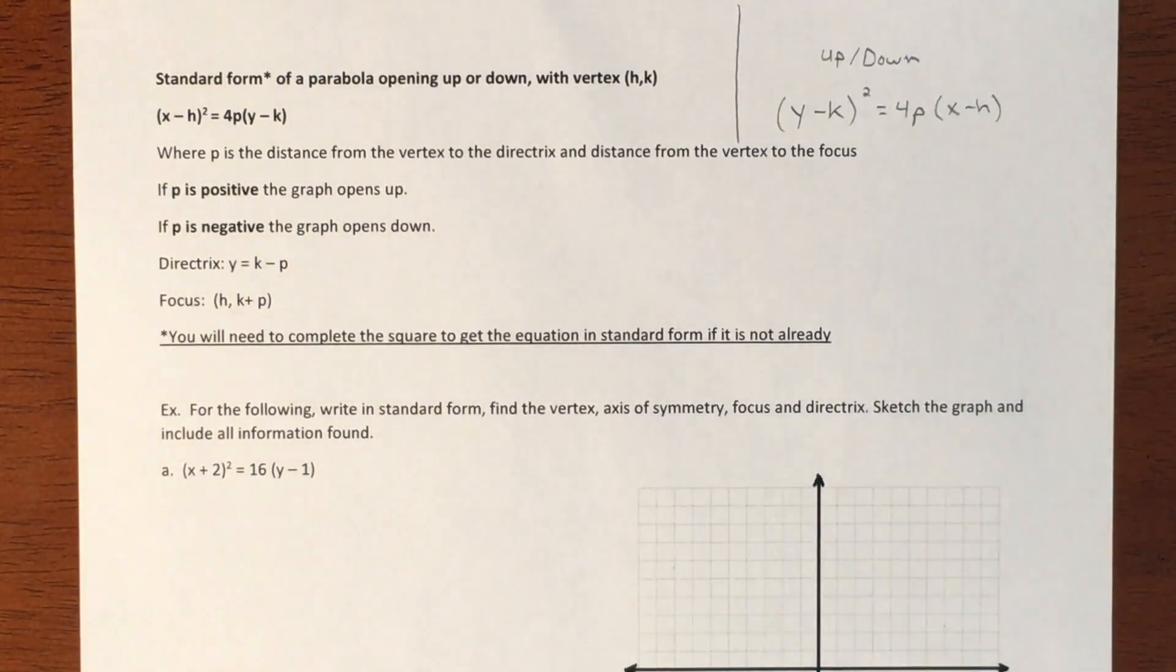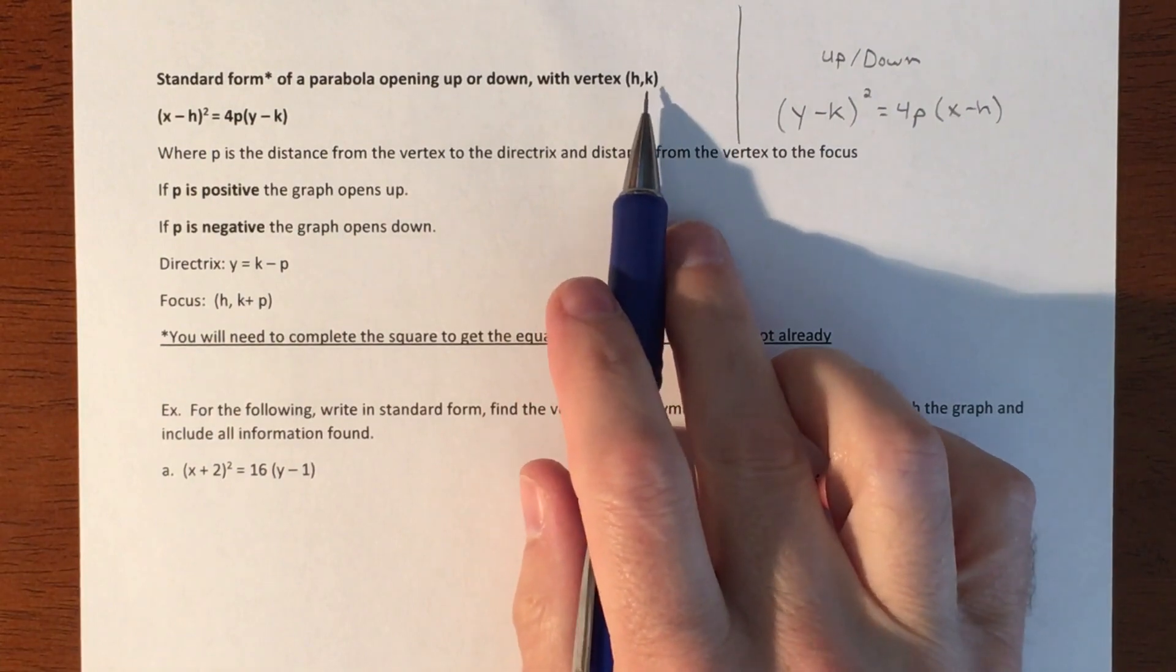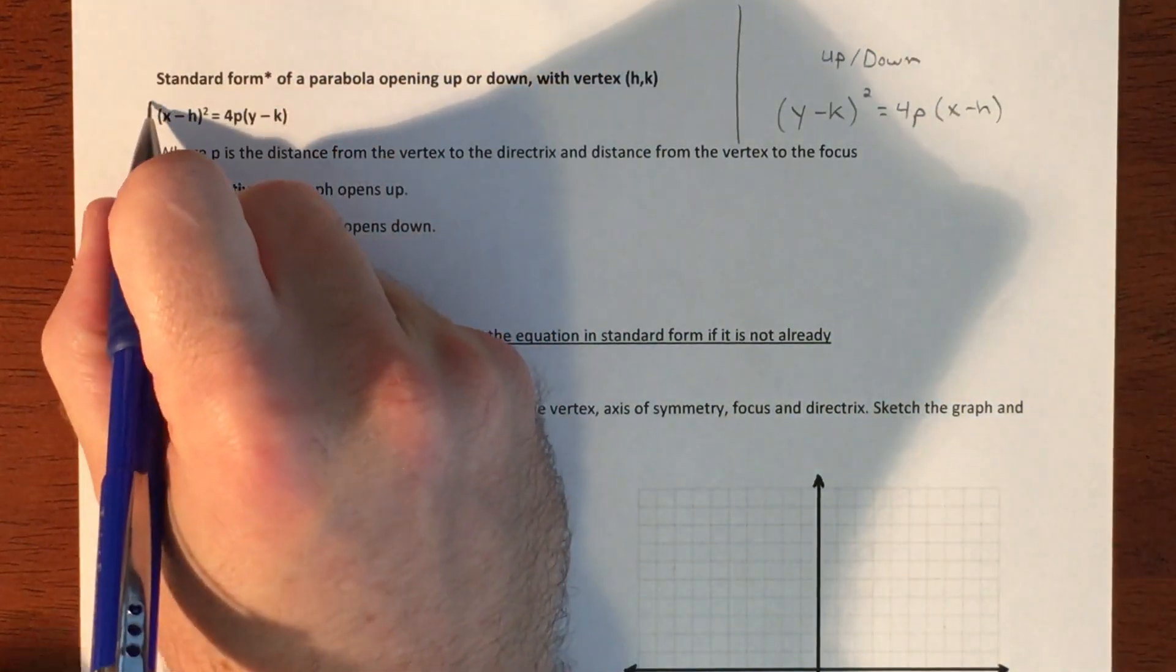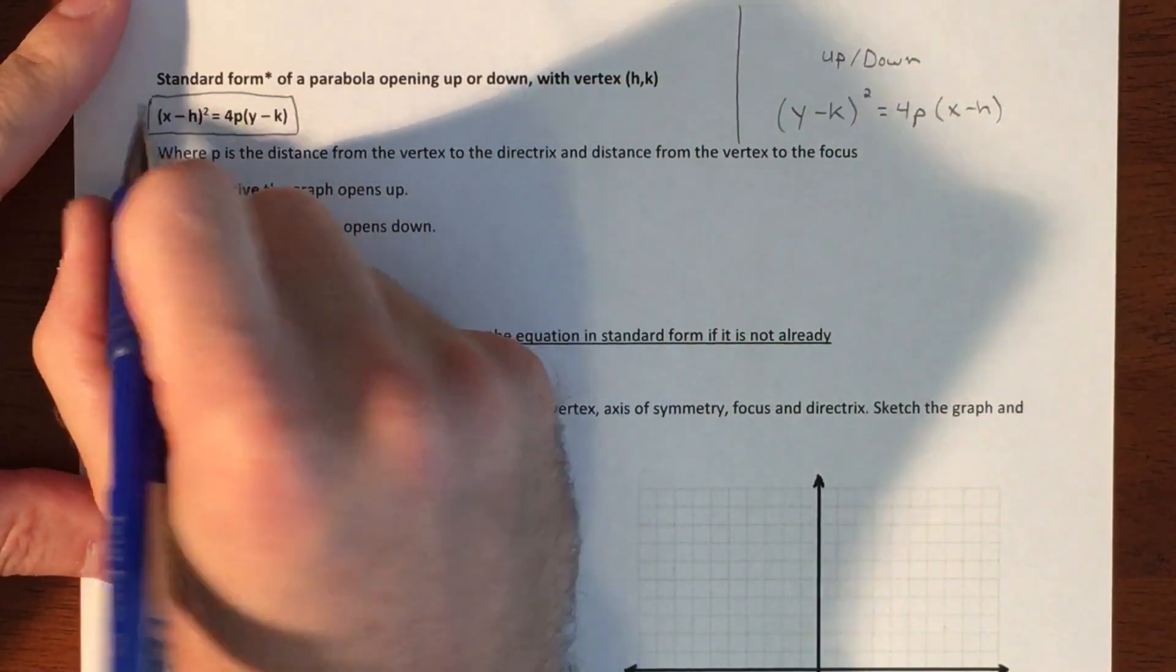In this video we are going to now graph a parabola, but it's not going to be centered at the origin. Our vertex is going to be h and k, but we have to do some manipulation. So here's what it looks like. Our first problem that we're going to do is going to be in that form already.